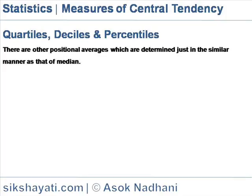Percentiles divide a series into 100 equal parts and as such there can be 99 percentiles, denoted by P1, P2, up to P99.